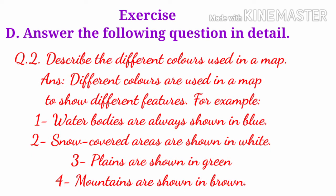Now write question number two from the next line: Describe the different colors used in a map. Write the answer from the next line. Different colors are used in a map to show different features. For example, number one: water bodies are always shown in blue.